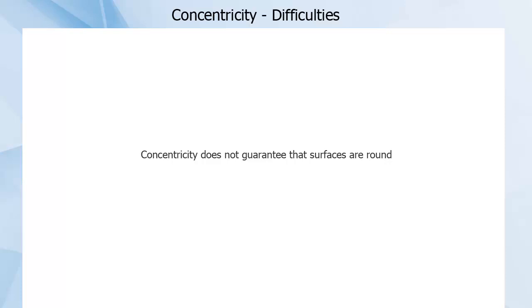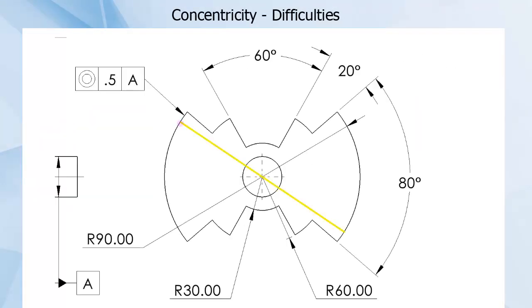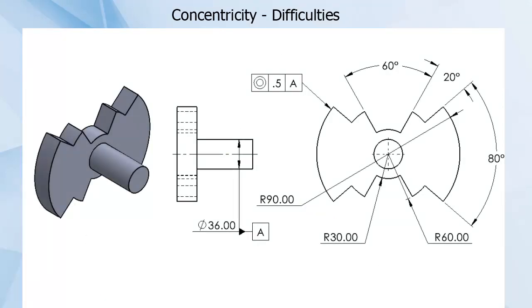Concentricity might also not be what you want because it doesn't guarantee the surfaces are round. For instance, this flywheel has diametrically opposed high and low points, so all median points of all cross-sections fall inside a small tolerance zone. But this is likely not a shape most people would think of as having high concentricity.